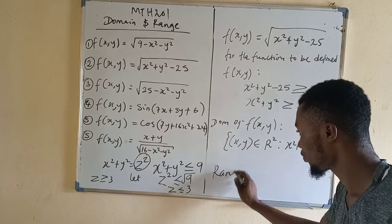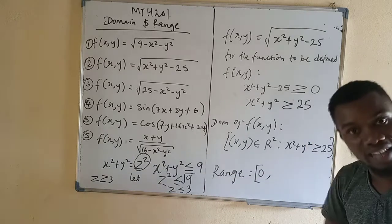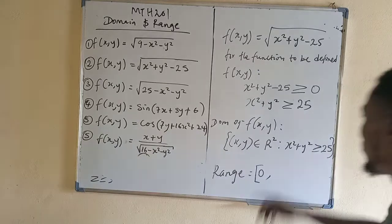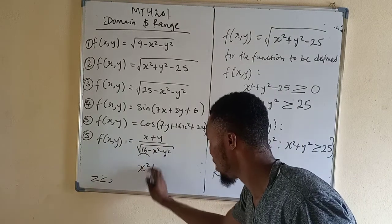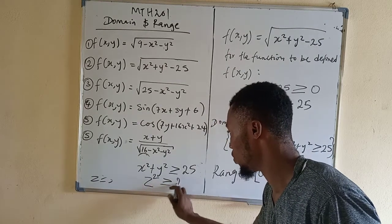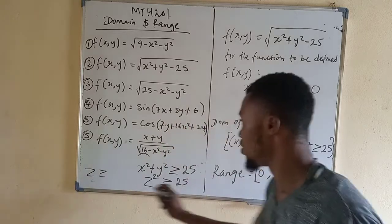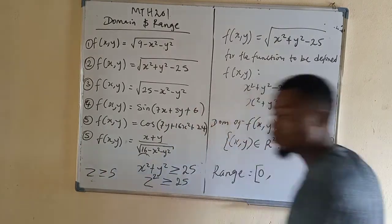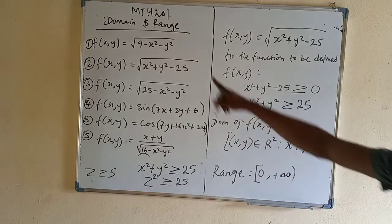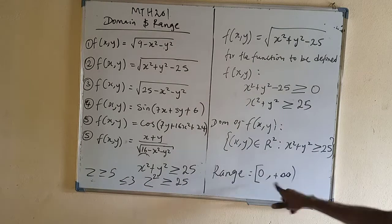Now what is the range? For every square root function the least answer it can produce is 0. So we start from 0. Where will it end? By Pythagoras, let x squared plus y squared equal z squared, so z squared is greater than or equal to 25. Therefore z is greater than or equal to square root of 25 = 5. Since it is greater than or equal to 5, it is increasing towards positive infinity. So the range is [5, +∞).